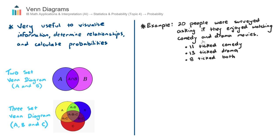Let's go through an example here. And through creating a Venn Diagram, you'll realize why it's quite useful. And then we'll answer some probability questions after creating the Venn Diagram. In this example, 20 people were surveyed asking if they enjoyed watching comedy and drama movies. 11 ticked comedy. 13 ticked drama. And 8 ticked both.